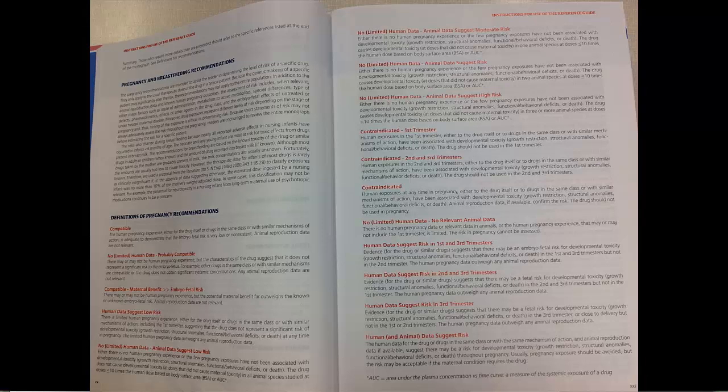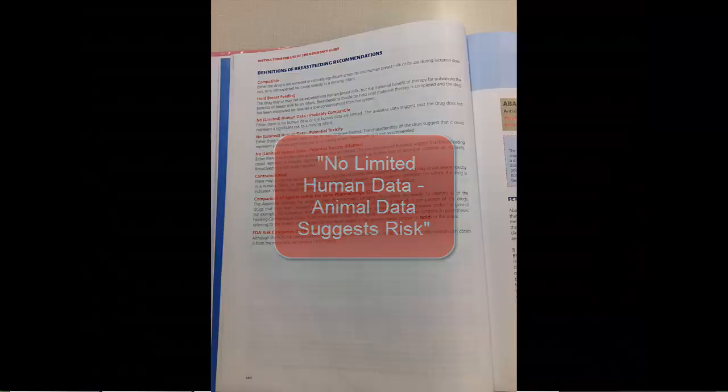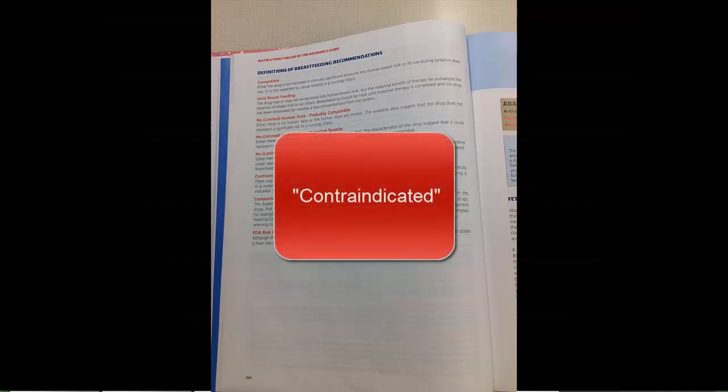The recommendations are very nuanced and well-informed bottom-line classifications such as, for example, no limited human data, animal data suggests risk, or, for example, contraindicated. These bottom-line classifications are defined here in this section.